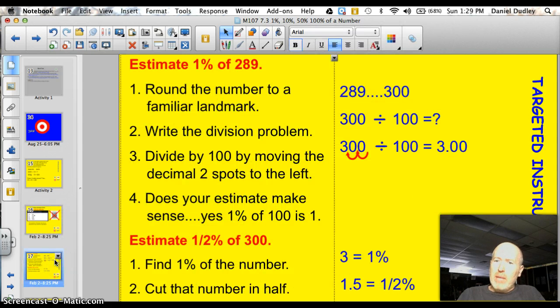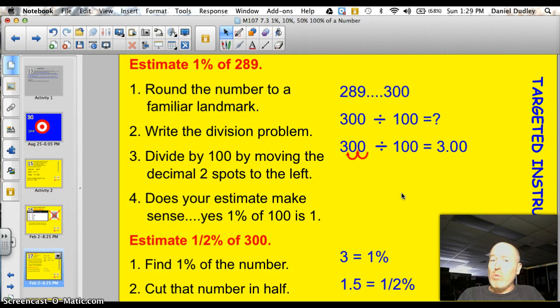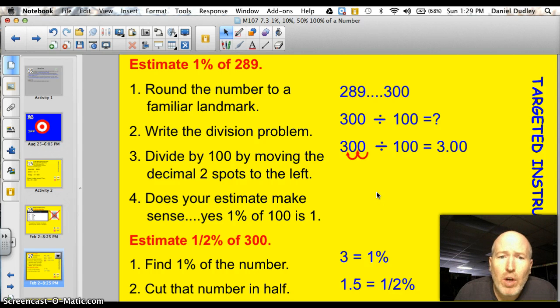Good question. All right, I'm going to take you through some examples, and then have you work some right after it. First of all, finding 1%. To find 1% of a number, step 1 is to round the number to a familiar landmark. So I had 289, just rounded it to 300.